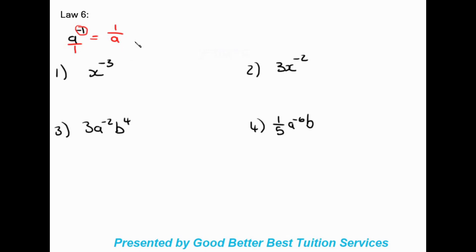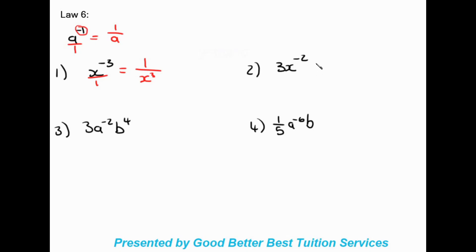For example, x to the power of negative three: we flip the fraction, giving one over x to the power of three. When we have a coefficient in front, like three x to the negative two, the three is not affected by the negative exponent — only the x is. So the three stays on top and the x moves to the bottom, giving three over x squared.